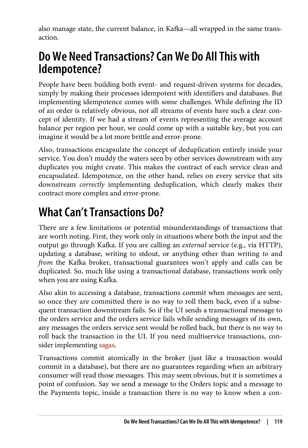Do we need transactions? Can we do all this with idempotence? People have been building both event and request-driven systems for decades, simply by making their processes idempotent with identifiers and databases. But implementing idempotence comes with some challenges. While defining the ID of an order is relatively obvious, not all streams of events have such a clear concept of identity. If we had a stream of events representing the average account balance per region per hour, we could come up with a suitable key, but you can imagine it would be a lot more brittle and error-prone. Also, transactions encapsulate the concept of deduplication entirely inside your service. You don't muddy the waters seen by other services downstream with any duplicates you might create. This makes the contract of each service clean and encapsulated. Idempotence, on the other hand, relies on every service downstream correctly implementing deduplication, which clearly makes their contract more complex and error-prone.